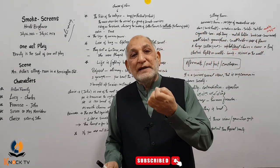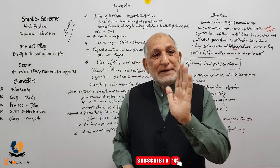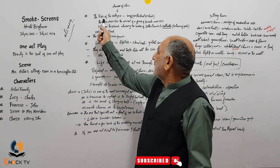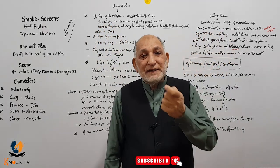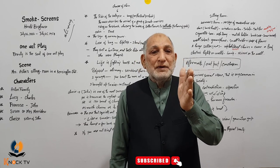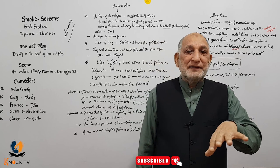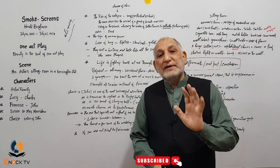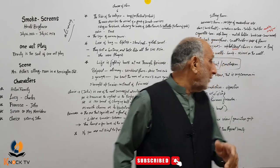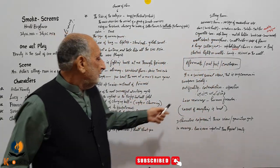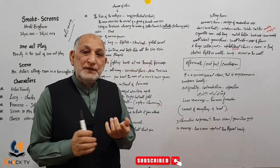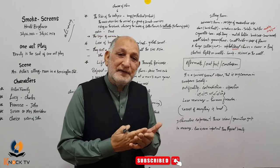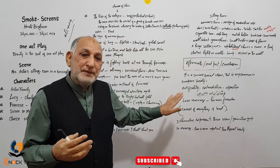جب play ختم ہو رہا تھا تو ماں نے وہی گانا سنا جو Susan سن رہی تھی — 'The Ride of the Valkyries۔' Valkyries وہ maiden girls ہیں جو heroes کی لاشیں جنگ سے اٹھا کر Odin کے پاس paradise یعنی Valhalla لے جاتی ہیں۔ Play کے دو themes ہیں: love marriage اور human freedom — کسی کو شادی کے لیے مجبور نہیں کر سکتے، smoking سے نہیں روک سکتے۔